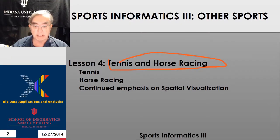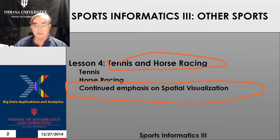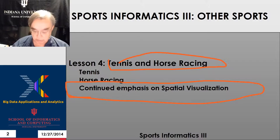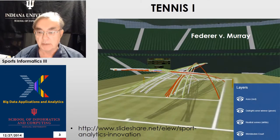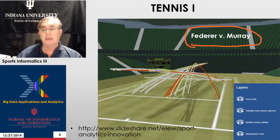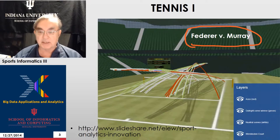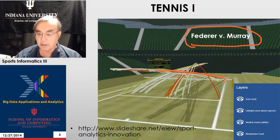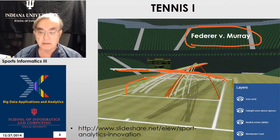So we're doing tennis and horse racing. We note the continual emphasis on spatial visualization, because there really is little discussion of how we translate the data — which is video data and sensor data — into predictions as to who will win the tennis match or which horse will win the race. Here we have Federer versus Murray. This comes from Esri, which is a well-known geospatial company. They have some plots of the stroke — a typical stroke of Federer versus Murray — starting off with raw data with maybe an artificial stadium placed beside it.